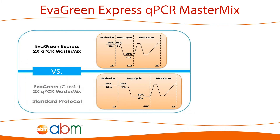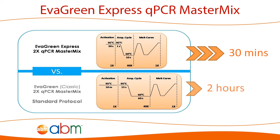Time is of the essence when it comes to experiments, and ABM's solution to efficient research is the EVA Green Express qPCR master mix, which can shorten a qPCR runtime from a standard protocol of about 2 hours to only 30 minutes.